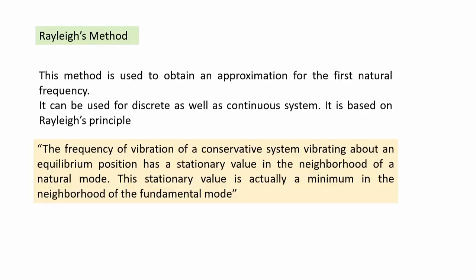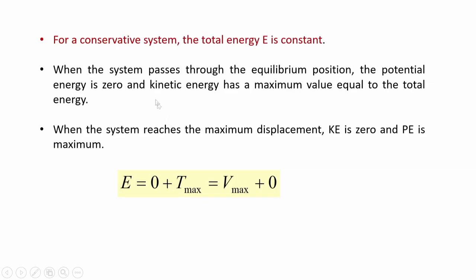Rayleigh's method is based on kinetic energy and potential energy. Rayleigh's principle states that the frequency of vibration of a conservative system vibrating about an equilibrium position has a stationary value in the neighborhood of a natural mode. For a conservative system, total energy is constant. When the system passes through the equilibrium position, potential energy is zero and kinetic energy has its maximum value equal to the total energy.